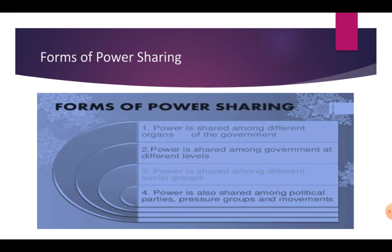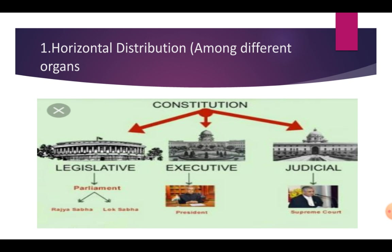Now we can understand all these four forms in detail, one by one. First is horizontal distribution. I think you are familiar with this diagram. Here, power is shared between different organs at the same level. Here you can see legislative, executive and judicial.